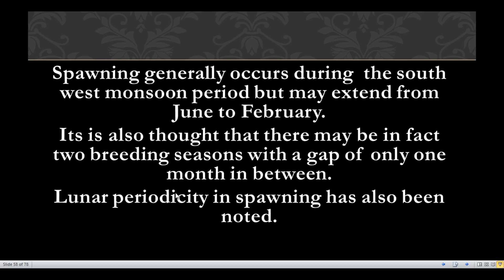Spawning generally occurs during the southwest monsoon period, which is the rainy season, but may extend from June to February. The northwest monsoon is the dry season. It is also thought that there may in fact be two breeding seasons with a gap of only one month in between.